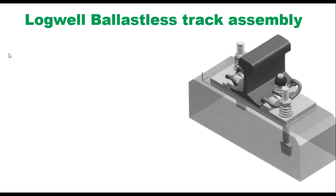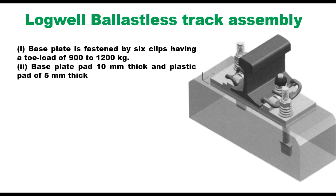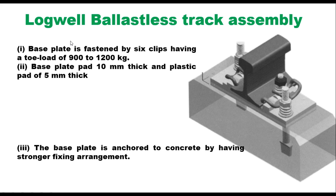Next comes the Logwell ballastless track assembly, made by Logwell Forge Limited, which is based in Gurgaon, Haryana. The basic design is the same; the only difference is in the fastenings. The base plate is fastened by 6 clips having a toe load of 900 to 1200 kg. Base plate pad is 10 mm thick and plastic pad is 5 mm thick. There is a rubber pad below the rail seat, then a steel plate, then the base plate, and the clips are the fastenings designed by Logwell. The base plate is anchored to concrete by a stronger fixing arrangement. This has also been used in urban metros in India.